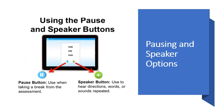Something important to point out are the pause and speaker buttons found at the bottom of each page. The pause button will be used when students are taking a break from the assessment. This is important because speed and accuracy are both used to determine the child's score. The speaker button can be used to hear the directions, words, or sounds and have them repeated.